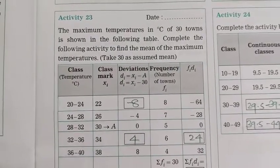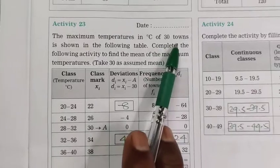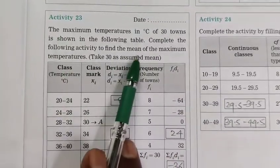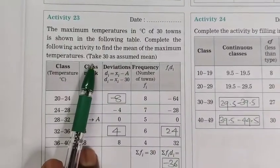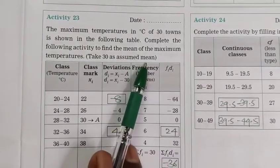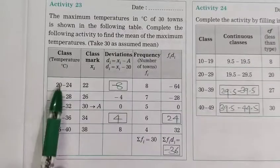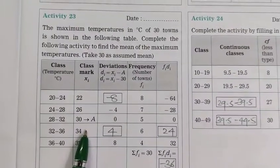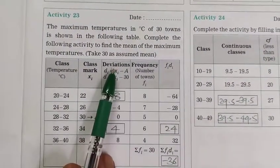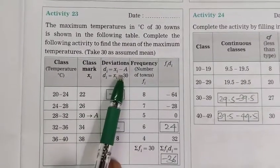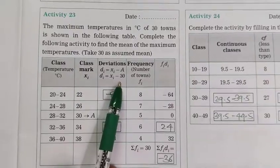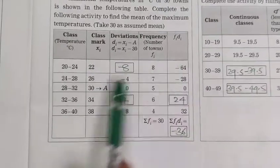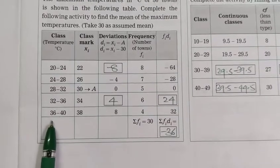Now Activity number 23. The maximum temperatures in degree Celsius of 30 towns is shown in the following table. Complete the following activity to find means of the maximum temperatures. Take 30 as assumed mean. Here, class temperature degrees Celsius, class marks xi, and deviations di, xi minus a, and di equal to xi minus 30, frequency number of towns fi, and here last column fi di.